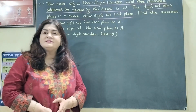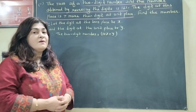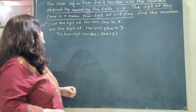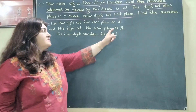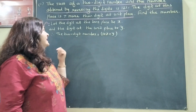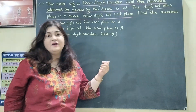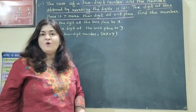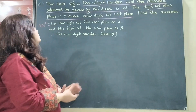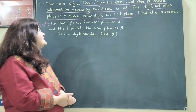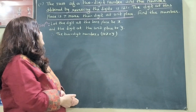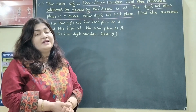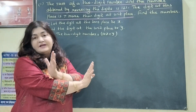Let us take the first problem. In the first sum we have a two-digit number. Let the digit at the 10th place be x and the digit at the units place be y. So the two-digit number will be 10x plus y. The first condition is that the sum of the two-digit number and the number obtained by reversing the digits is 121.